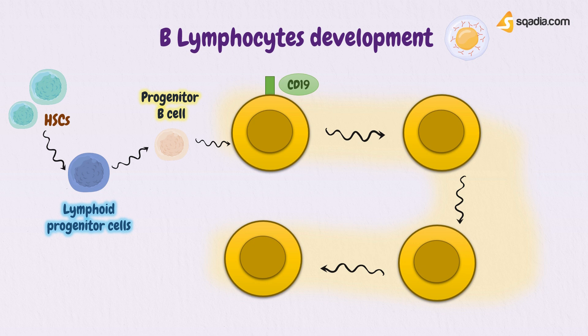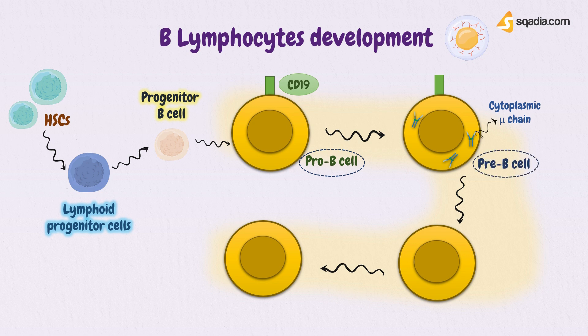The cell at this stage is called a pro-B cell. The cell then further differentiates and expresses the IgM heavy chain — that is, the mu chain — in its cytoplasm, and is now known as a pre-B cell. In the next stage, the B cell expresses IgM on its surface and is known as an immature B cell.